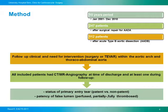We included patients who had a CT or MR angiography at time of discharge and at least one during follow-up. Assessing these CT or MR scans, we were looking at the status of the primary entry tear, deciding whether it was still open or closed — patent versus non-patent — and looked at the patency of the false lumen, dividing it into three groups: a perfused false lumen, fully or partially thrombosed false lumen.